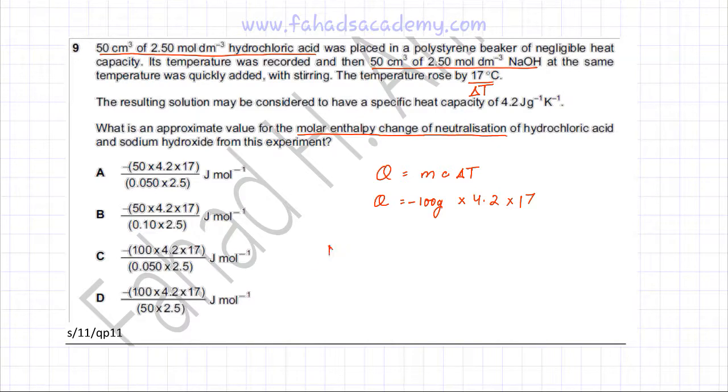Let me write down the reaction. What's happening is NaOH is reacting with HCl and it is producing NaCl and H2O.